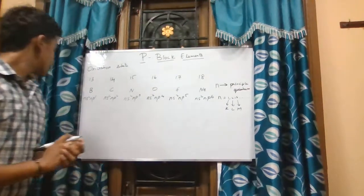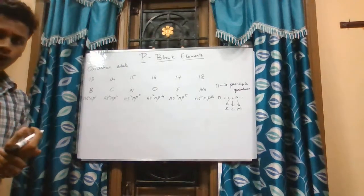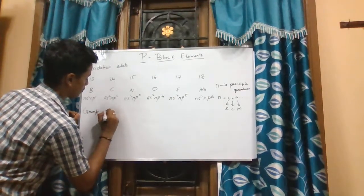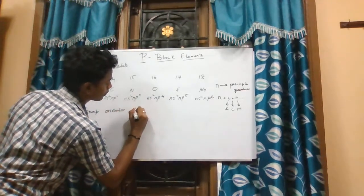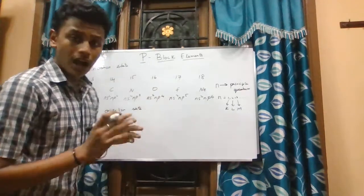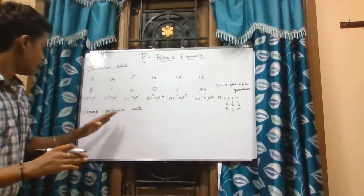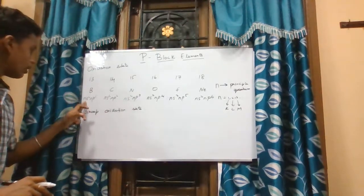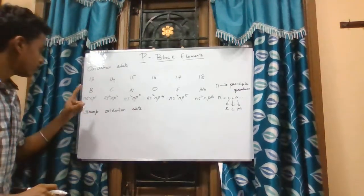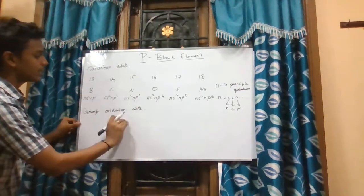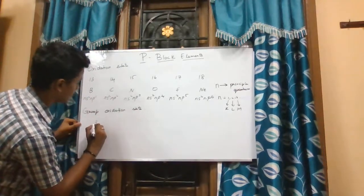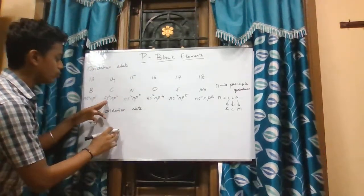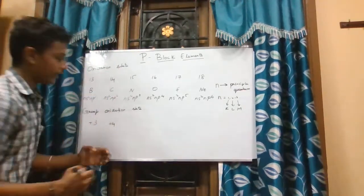The group oxidation state, or highest oxidation state, is calculated by the sum of electrons in the s-shell and p-shell. For group 13, the s-shell has 2 electrons and p-shell has 1, giving a group oxidation state of +3. For group 14 it is 2+2 = 4. For group 15 it is 5.